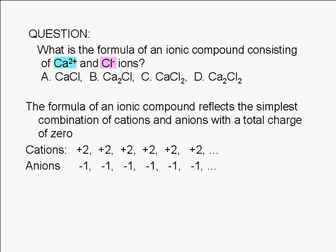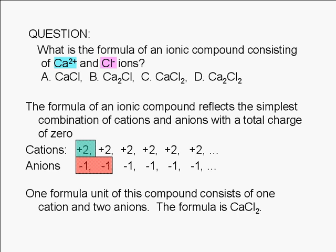The simplest combination of ions with a total charge of zero consists of one calcium ion and two chloride ions. This combination, two cations and one anion, gives us a total charge of zero.